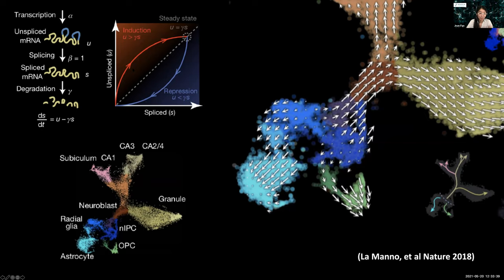This allows us to derive not only a pseudotemporal ordering but also directionality in our reduced two-dimensional spaces, enabling us — without any prior knowledge — to identify putative progenitors giving rise to different glial subpopulations versus neuronal subpopulations. We can also examine what transcriptional states are necessary at differentiation forks for cells to eventually progress into terminally differentiated cell states.